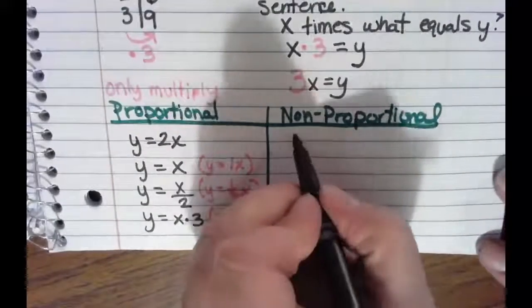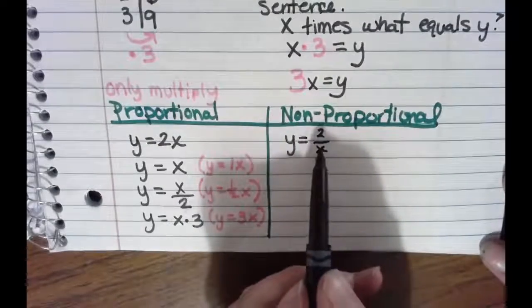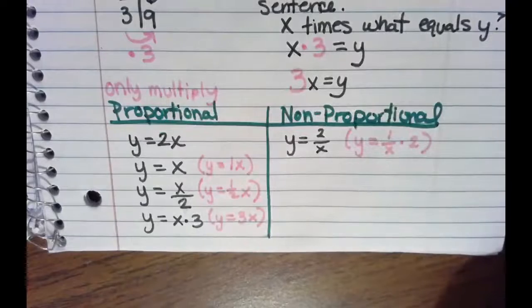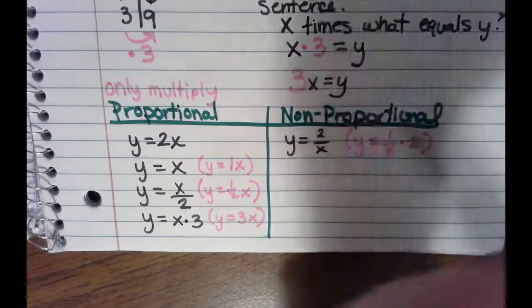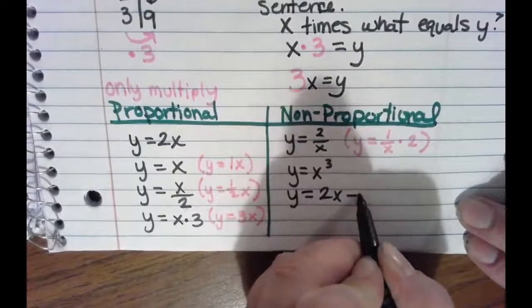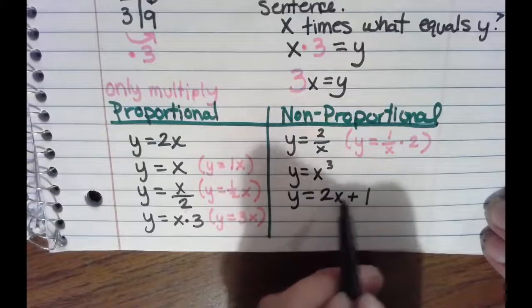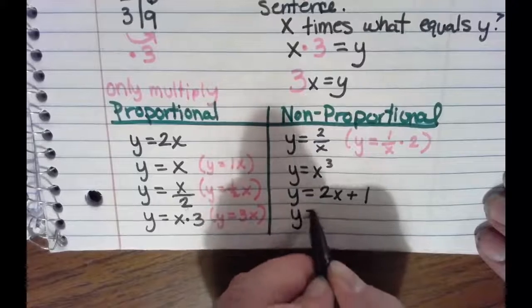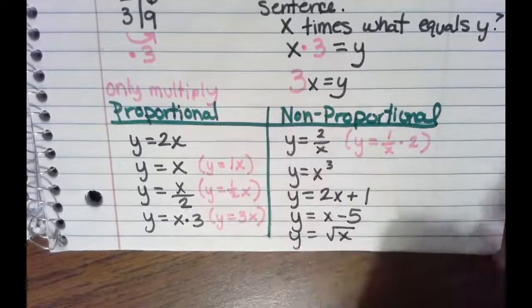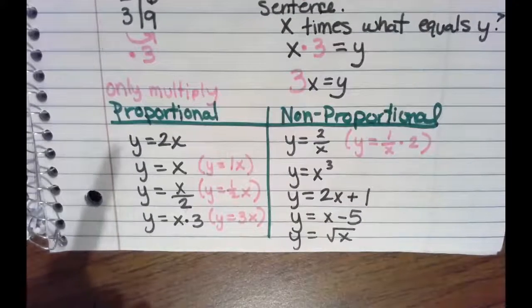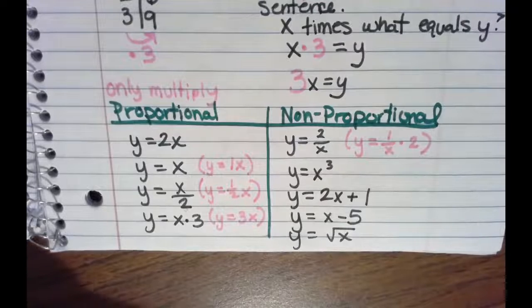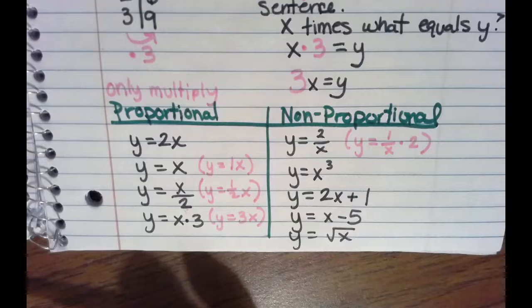Now let's look at some examples that are not proportional. Y equals 2 divided by X — because this is the same as Y equals 1 over X times 2, and the X is not in the numerator; we're multiplying by 1 over X, so that's not okay. Y equals X cubed — not proportional because we're cubing. Y equals 2X plus 1 — not proportional because of the addition. Even Y equals X minus 5 — not proportional. Y equals the square root of X — not proportional. If we do anything to X other than multiply it, it's not proportional.